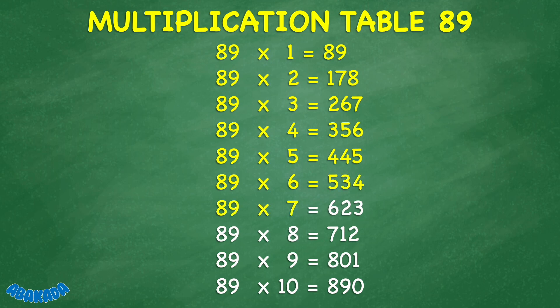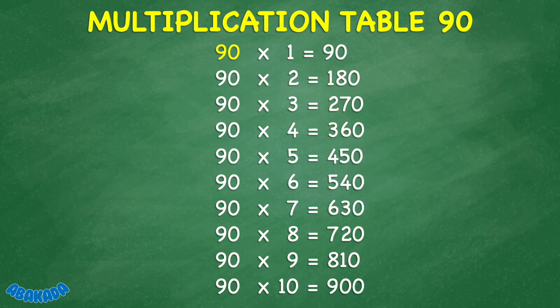89 times 7 equals 623. 89 times 8 equals 712. 89 times 9 equals 801. 89 times 10 equals 890.